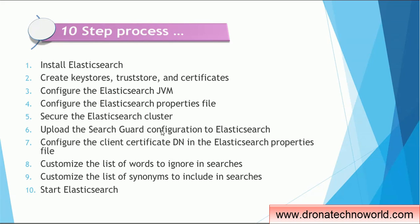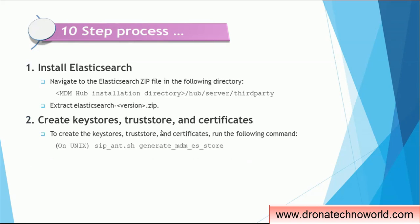The sixth step is to upload the SearchGuard configuration to Elasticsearch. The seventh step is to configure the client certificate DN in the Elasticsearch properties file. Steps eight and nine are not that critical — they are more optional. The ninth step is to customize the list of words to ignore in searches, and the ninth step is to customize the list of synonyms to include in searches. The tenth step is simply starting Elasticsearch itself.